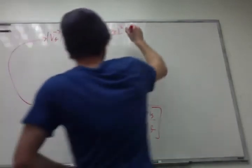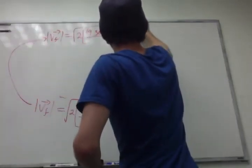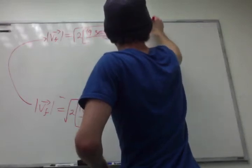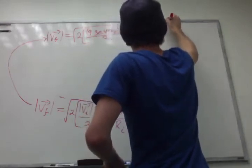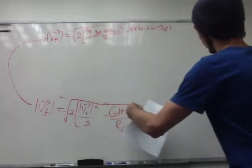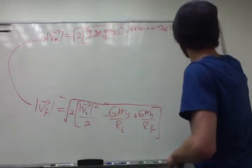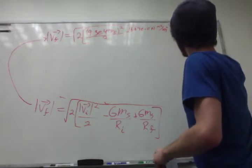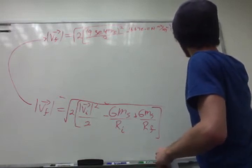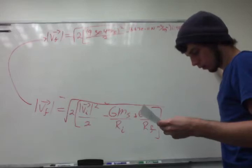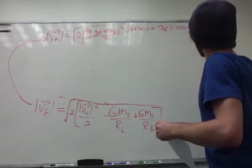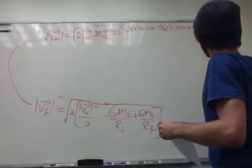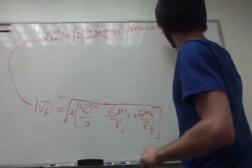Minus the gravitational constant times the mass of the sun, that's 1.98, one of those lines, yeah, ×10^30 kilograms, all of that over the initial radius.